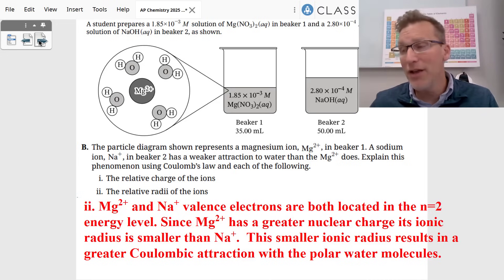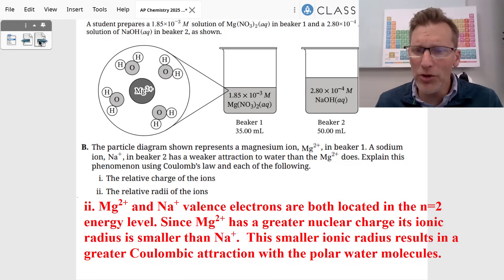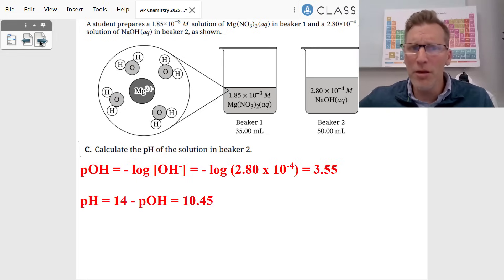But since magnesium plus two, again, has a greater nuclear charge, it has a smaller ionic radius than the sodium plus one. That smaller atomic radius results, since it's on the denominator of F equals KQQ over R squared, results in greater Coulombic interactions with the water molecules.